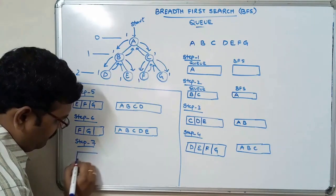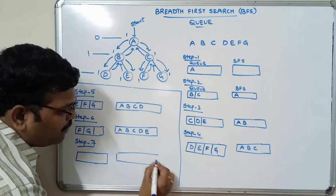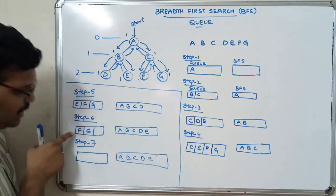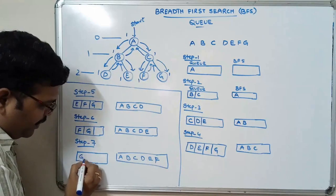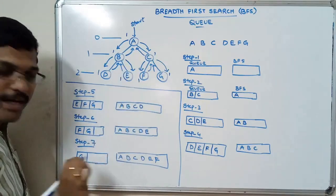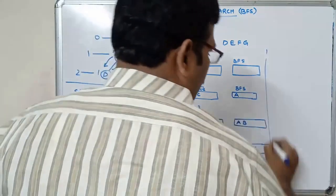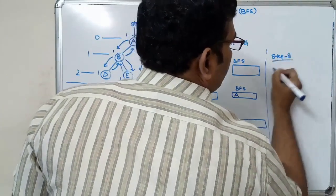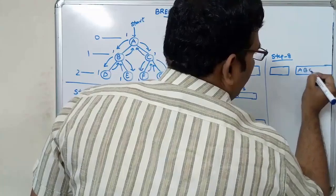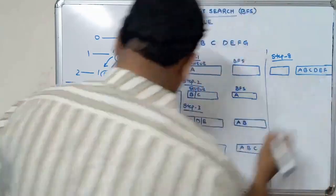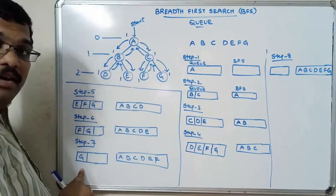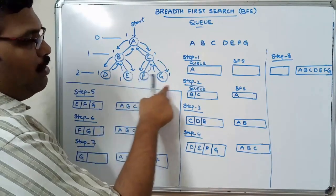Step seven: remove F from the queue and place it in BFS. Insert all adjacent nodes of F into the queue — there are no adjacent nodes for F. Step eight: G is removed from the queue and placed in BFS. Insert all adjacent nodes of G into the queue — there are no adjacent nodes for G.